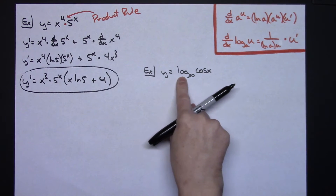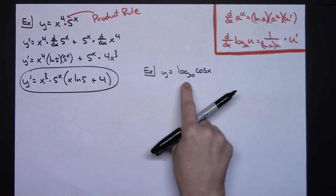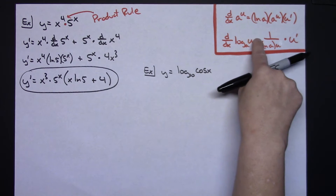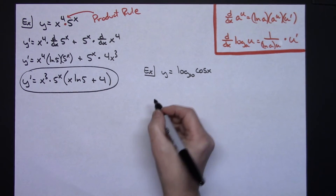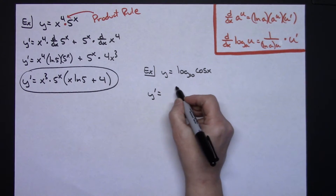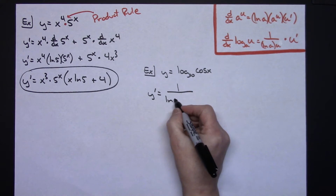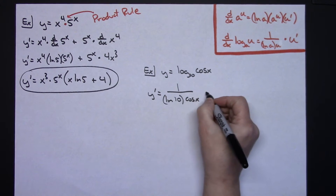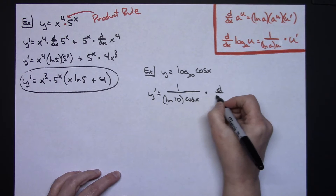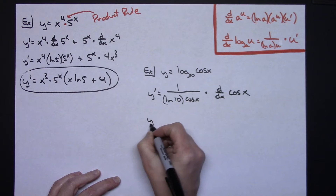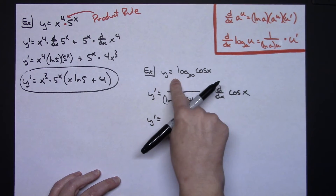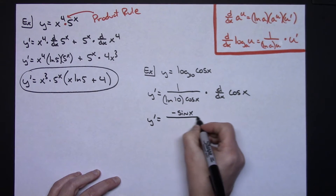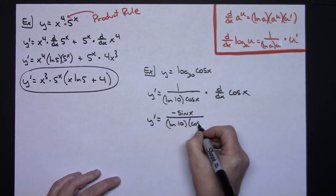On this next example we're going to use the second formula. We've got y equals log base 10 of cosine x — I wrote the base 10 in explicitly. Cosine x is a function of x and the base is a constant, so I can implement the second formula. So y prime equals 1 over the natural log of 10 times u, where u is cosine x, times u prime — that is d/dx of cosine x.